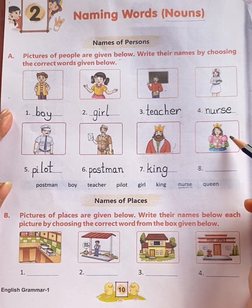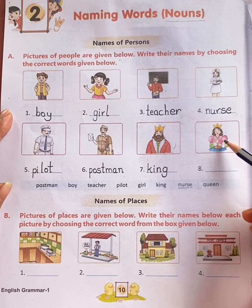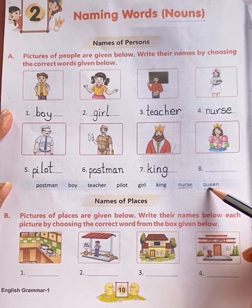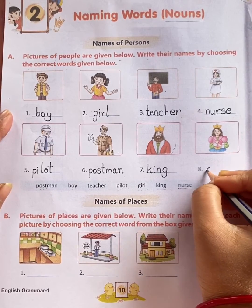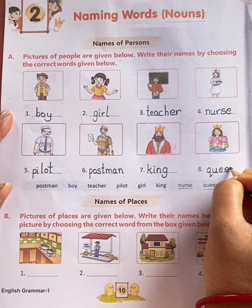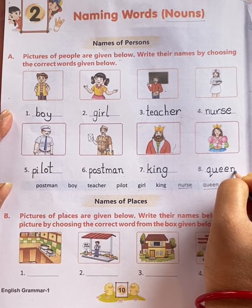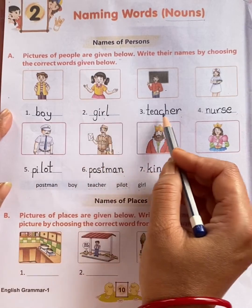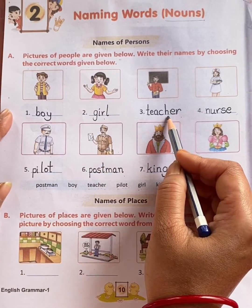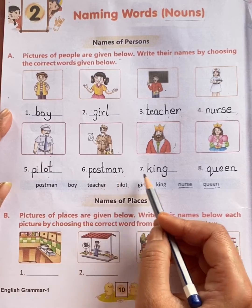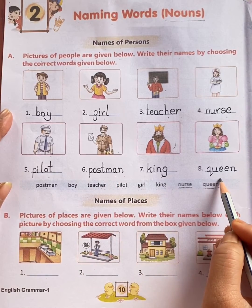See the eighth picture. She is queen. The name of the people is queen. Q-U-E-E-N, queen. So write here Q-U-E-E-N, queen. Boy, girl, teacher, nurse, pilot, postman, king, queen.